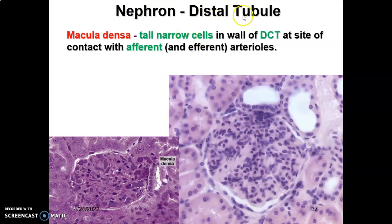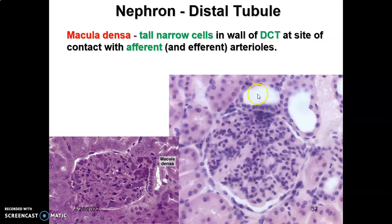At the distal tubule, we have what are called macula densa cells. Macula densa cells are tall, narrow cells on the wall of the distal convoluted tubule at the place where the distal convoluted tubule contacts the afferent arteriole. The cells of the distal convoluted tubule at this location are tall and narrow, and these are what form the macula densa cells — you can see the tall narrow cells of the distal convoluted tubule here.